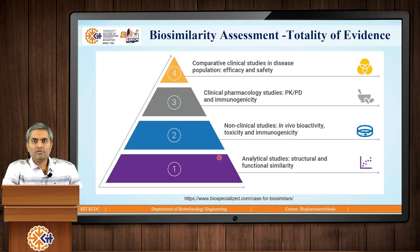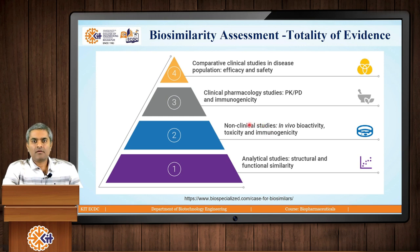With reference to the previous class on drug discovery and development, we have already studied the developmental cycle of any drug molecule. There is a concept called biosimilarity assessment, where whenever any new drug is developed, the analytical studies — that is the initial characterization — are done, then animal studies (non-clinical or pre-clinical studies) are performed, and then clinical studies on humans are also performed. The company producing a biosimilar molecule has to give a totality of evidence that the molecule is really a biosimilar to the main innovator.